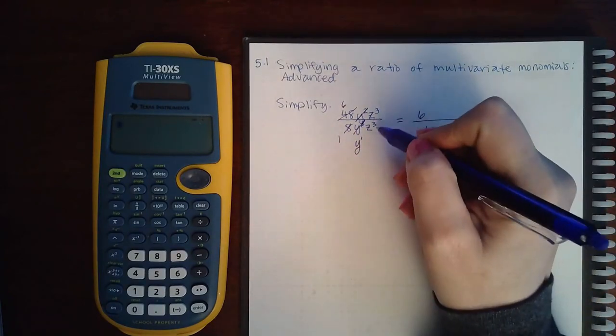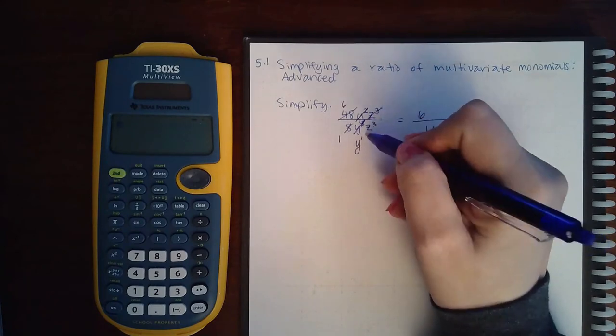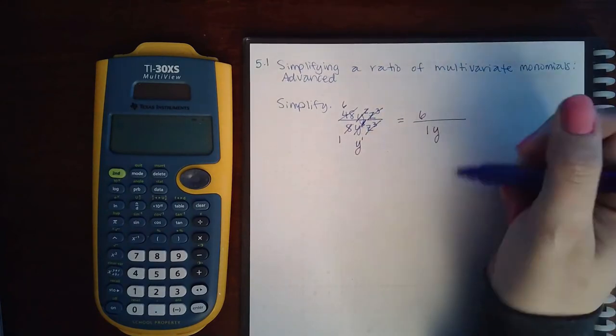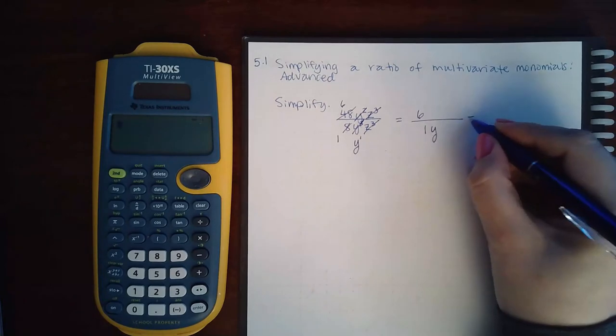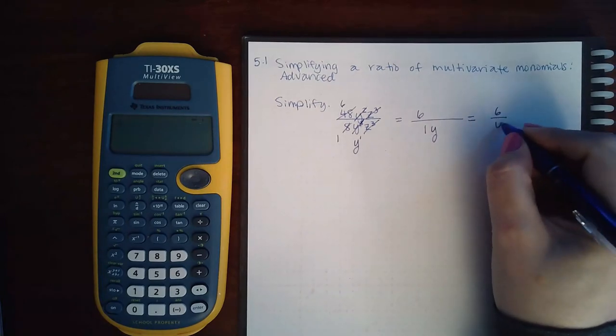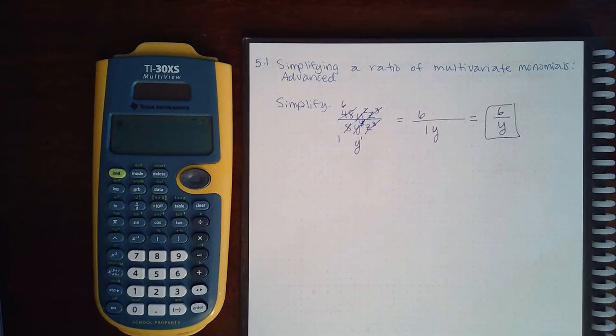Then z3 and z3, well if I cancel 3 z's from both the top and the bottom, it just wipes out all the z's. So if I clean this up, I end up with 6 over y as my reduced fraction.